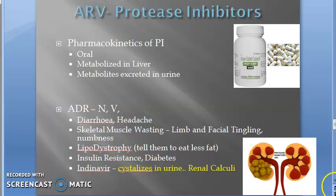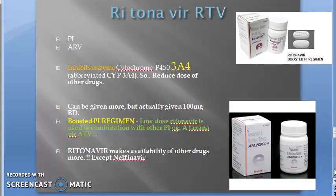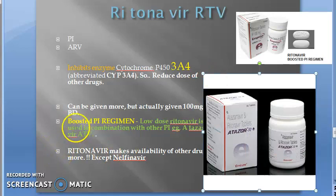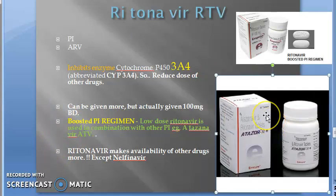Moving on: ritonavir — the main thing you should know is that ritonavir inhibits an enzyme, so it can increase the drug level of other drugs. Hence it is always used in combination with other PIs, and that is called the boosted PI regimen. A low dose of ritonavir — that is 100 mg only — given with other PIs will boost the dose of the other drugs.